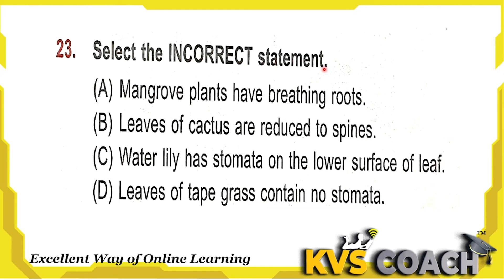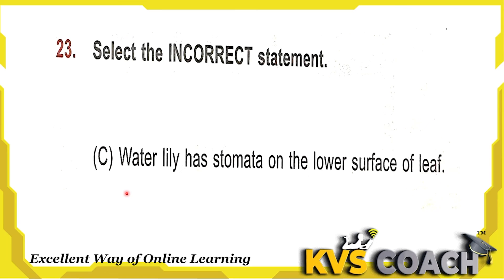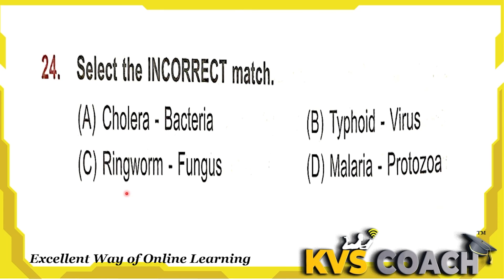Next question: select the incorrect statement. Option A — mangrove plants have breathing roots — correct statement. Option B — leaves of cactus are reduced to spines — correct, that is why they prevent water loss. Option C — water lily has stomata on the lower surface of the leaf — no, this is wrong. Option D — leaves of tape grass contain no stomata — correct. So the incorrect statement is option C.